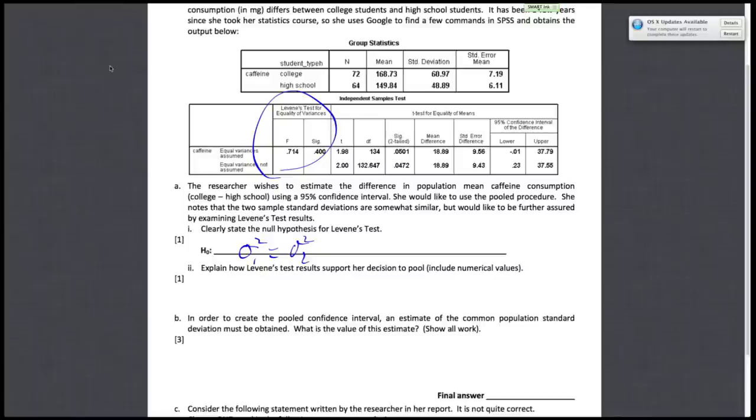Part 2: explain how Levine's test result supports her decision to pool, and you need to include the numerical values.